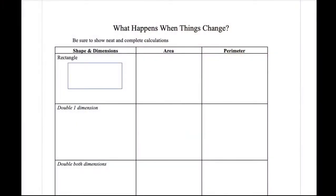In today's lesson we are going to be looking at the area and perimeter of 2D shapes, and how they change when we adjust the dimensions of those specific shapes. Let's go through one example. If we look at a rectangle, let's come up with certain dimensions — let's say we have four and six for our rectangle. If we wanted to find the area of this rectangle, well, area equals length times width.